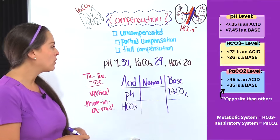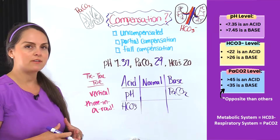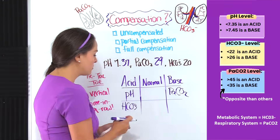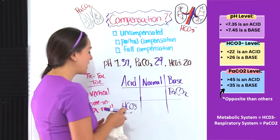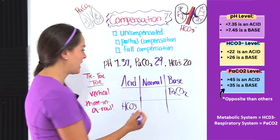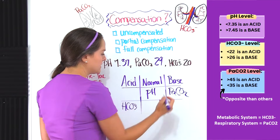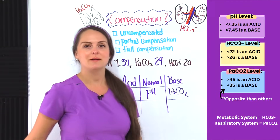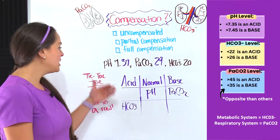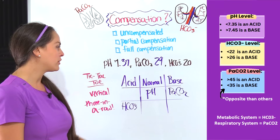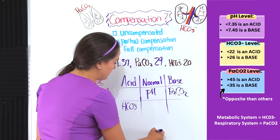Now let's take that same exact problem and just change the pH. Now it's 7.37. A normal pH is 7.35 to 7.45, so our pH just became normal. That tells me full compensation — our pH is normal. And if you're using the tic-tac-toe method, you don't have a vertical three in a row, which is another indicator. So we know we have full compensation.